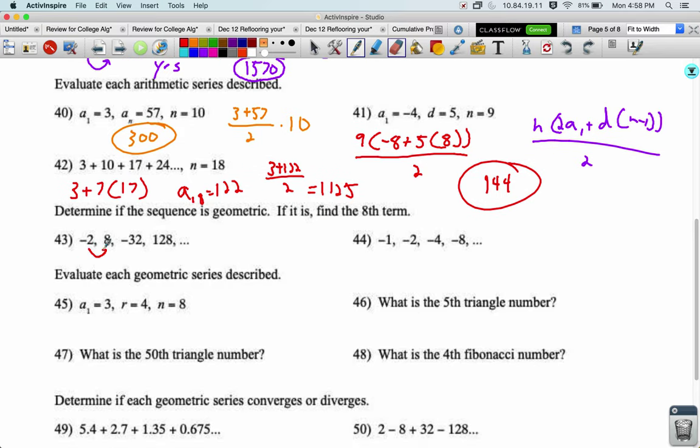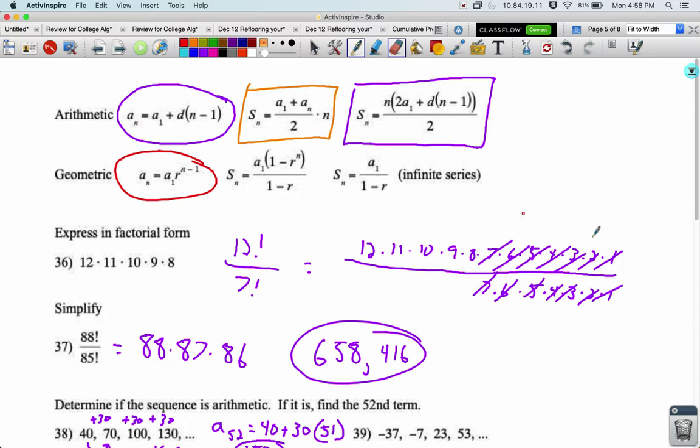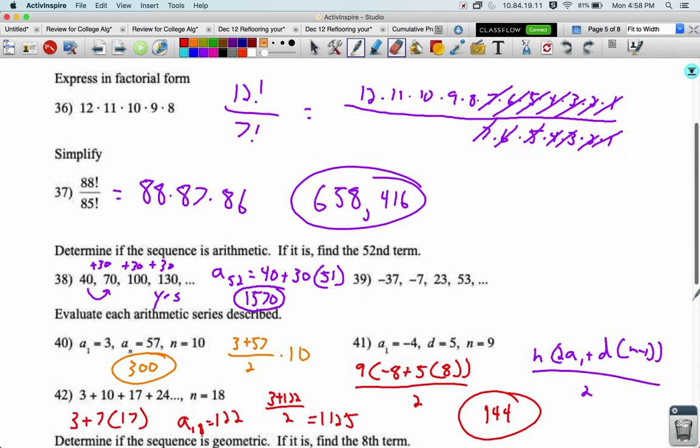For something to be geometric, we need a constant multiple. What do I multiply negative 2 by to get negative 8? I can do negative 8 divided by negative 2 to get that it's negative 4. Or you can just look at it, it looks like we are continuing to multiply by negative 4, so that means yes, this is geometric.